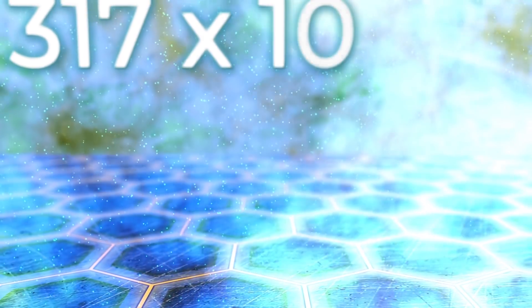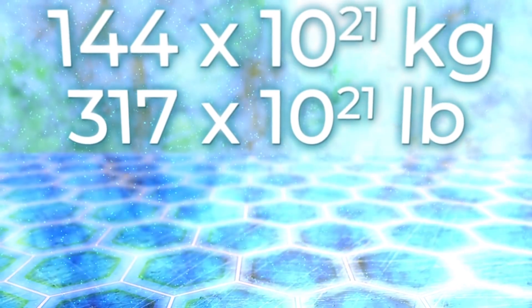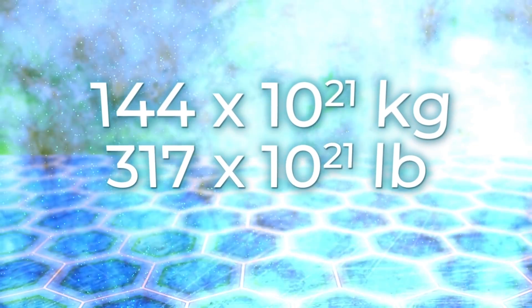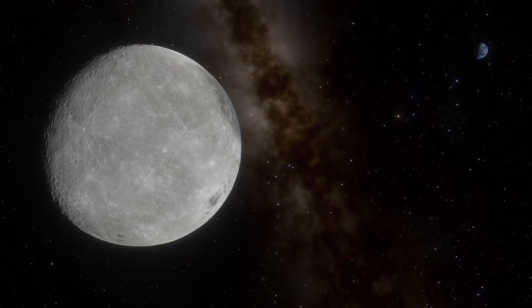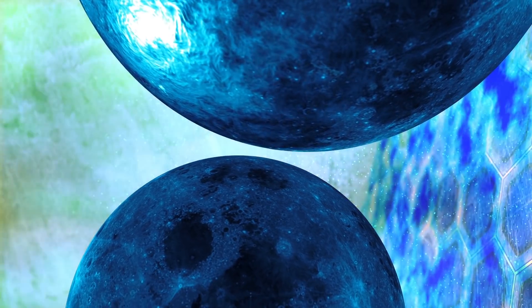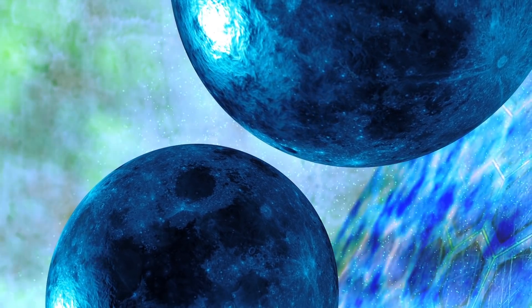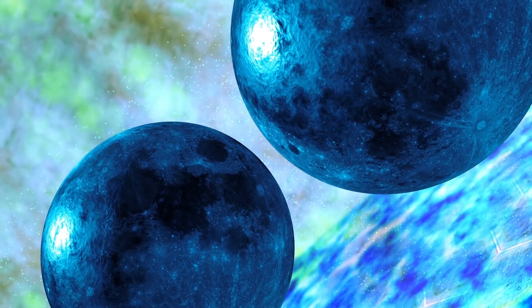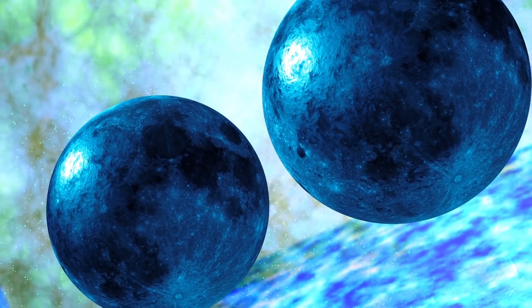So, to extinguish it, 144 sextillion kilograms of liquid nitrogen are needed. The mass of our satellite, the Moon, is just 70 sextillion kilograms. Now, suppose we managed to get a mass of liquid nitrogen weighing the equivalent of about two of our moons and poured it into the core of the Earth.